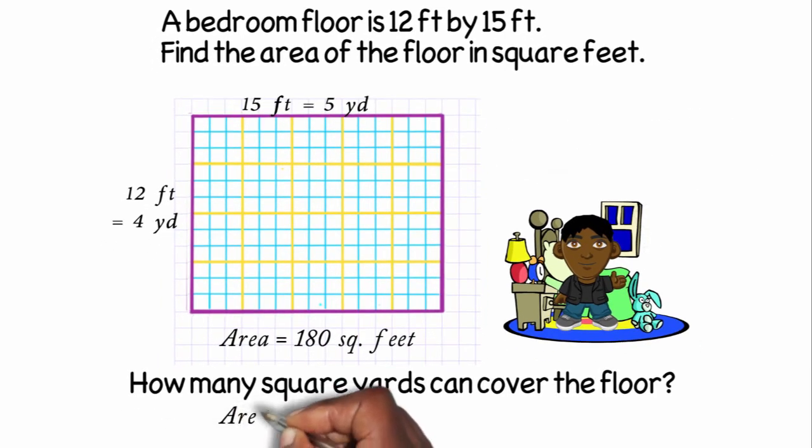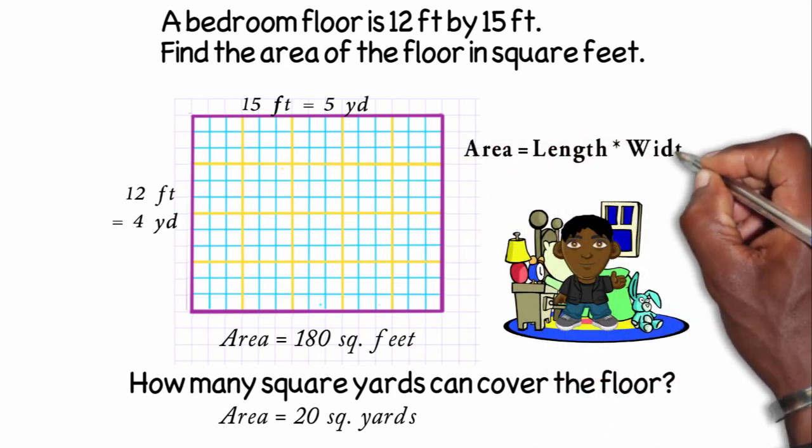In both examples, by knowing the length of my rectangle and the width of my rectangle, I was able to find the area. So my formula for area of a rectangle would be the length of the rectangle times the width.